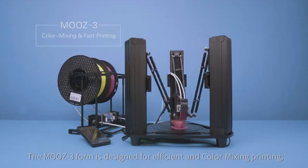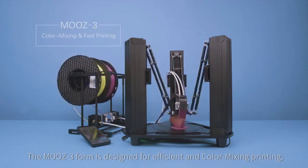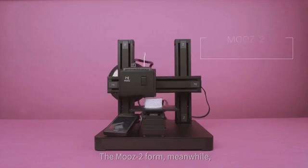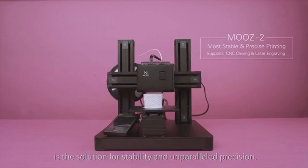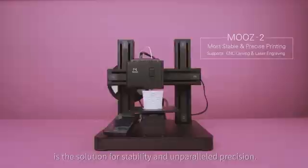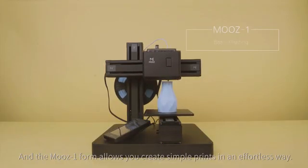The Moos 3 form is designed for efficient and color mixing printing. The Moos 2 form, meanwhile, is the solution for stability and unparalleled precision. And the Moos 1 form allows you to create simple prints in an effortless way.